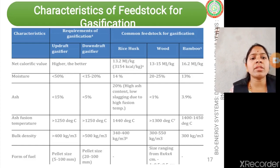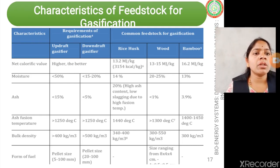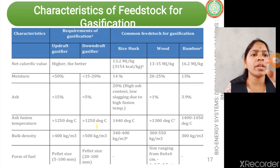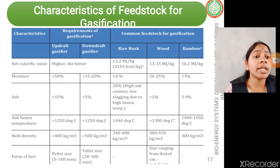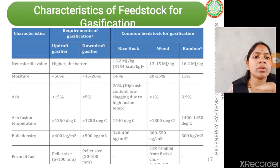The characteristics of the feedstock are critical. Moisture content, ash content, bulk density, and particle size are the most prominent characteristics, as they determine the quality of producer gas in terms of tar composition, dust composition, and net calorific value. A comparison table shows updraft and downdraft gasifiers evaluated against agricultural feedstocks such as rice husk, wood, and bamboo. Bamboo wood has a high net calorific value. For better efficiency, the net calorific value must be higher for both gasifier types.